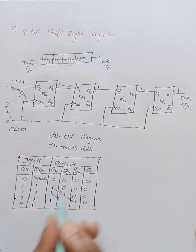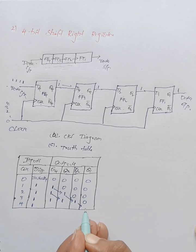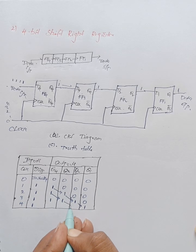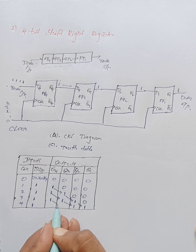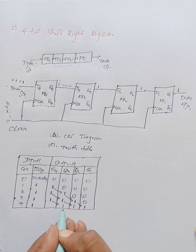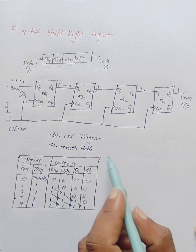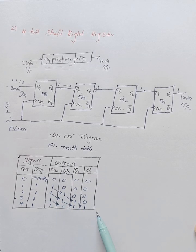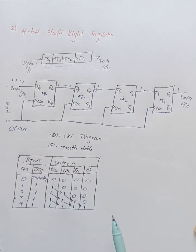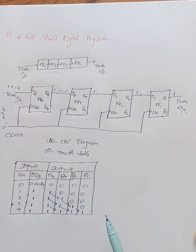Whenever the fourth clock pulse is applied, D input is one. Q2 data shifts to Q1, Q3 data shifts to Q2, and Q4 data shifts to Q3. All outputs — Q4, Q3, Q2, Q1 — become one. You can observe in the truth table that data started at the left side and moved towards the right side — that is called a 4-bit shift right register.